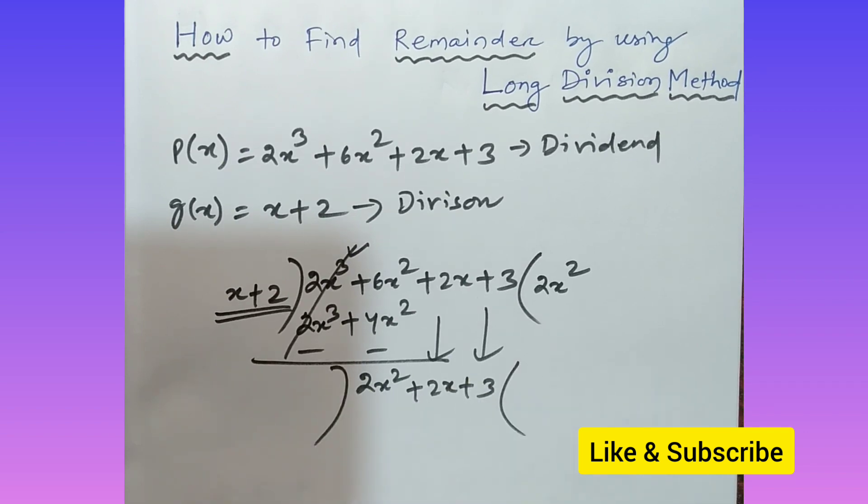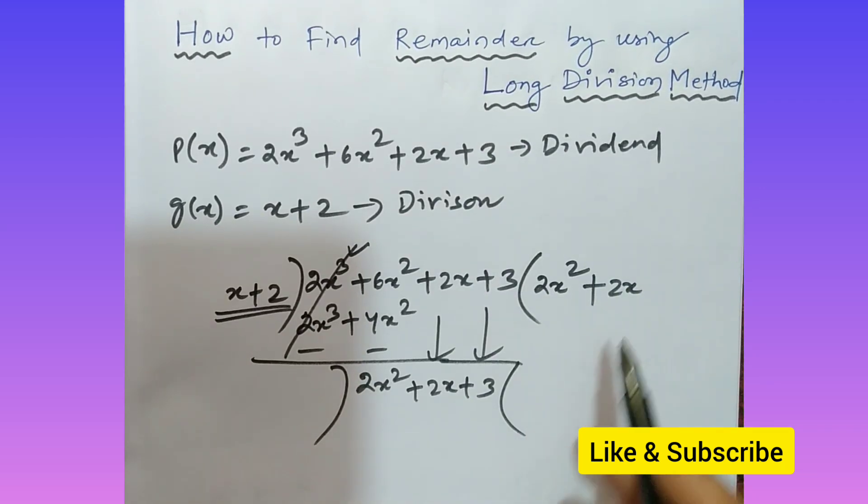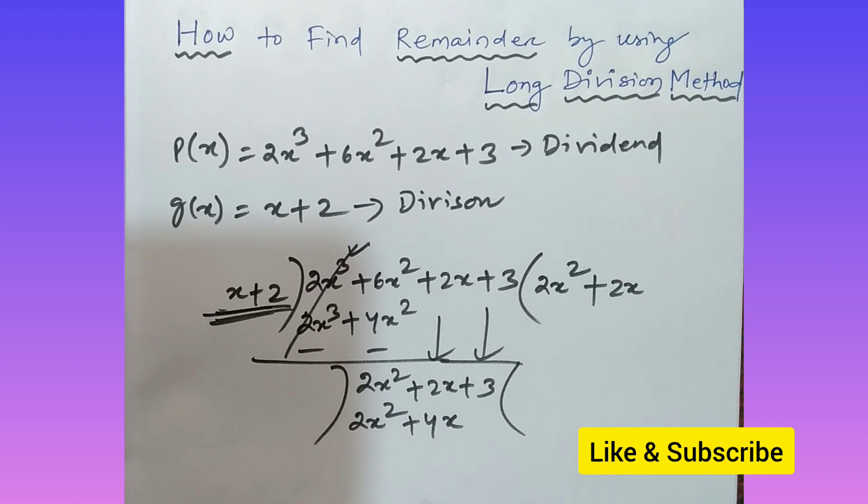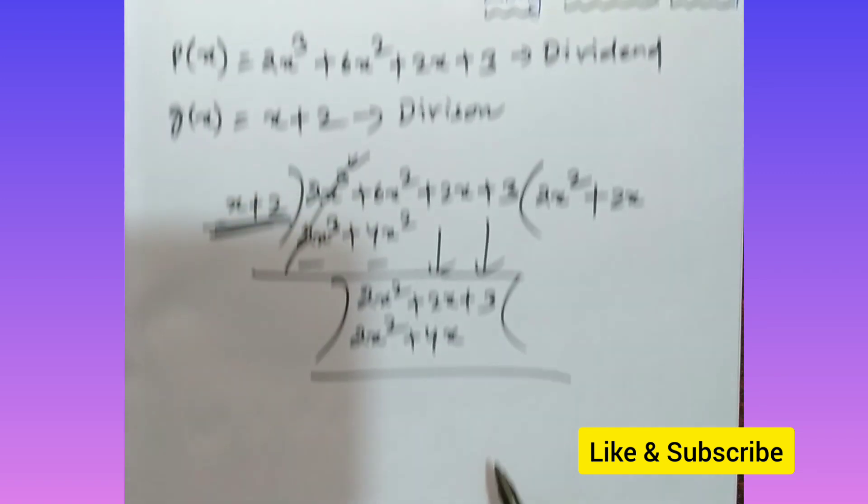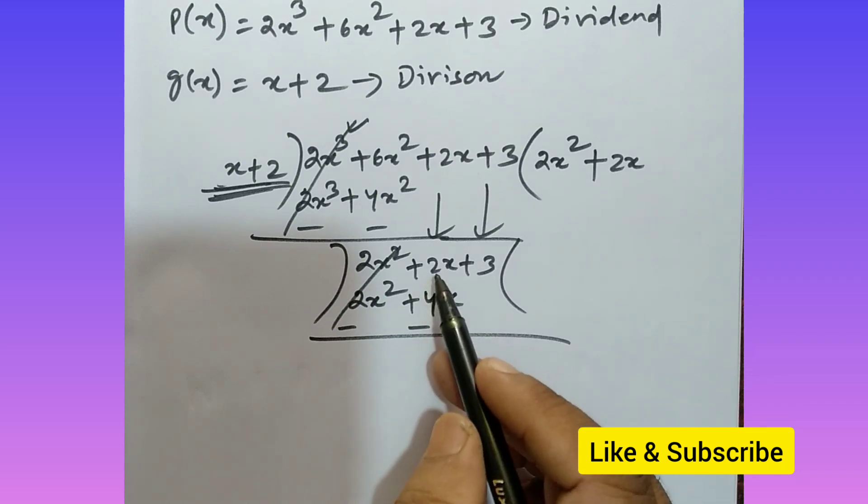Again, same procedure. This 2x² divided by x, what do you get? 2x. So in the quotient, you put 2x. Now multiply this 2x with the whole divisor. What are you getting? You're getting 2x² plus 4x. Then subtract: 2x minus 4x is minus 2x, plus 3.